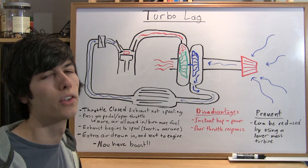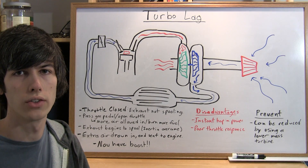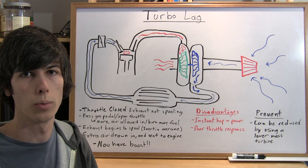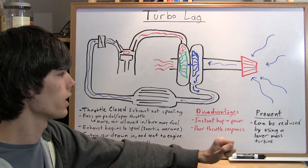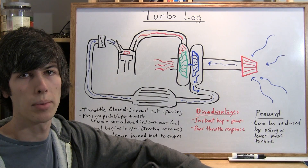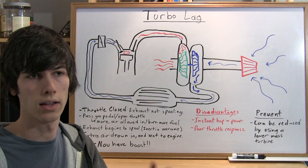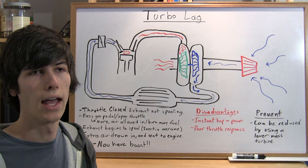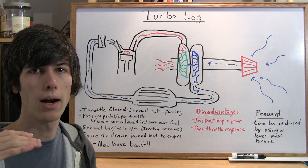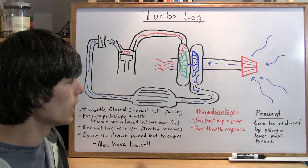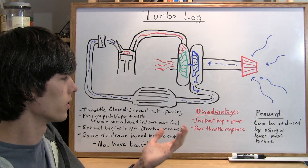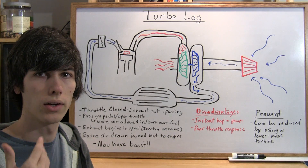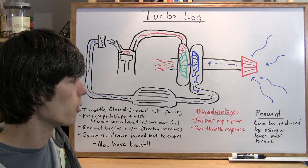The disadvantages of turbo lag — it's something that all turbocharged engines will have, but you can minimize it and some engines respond much better than others. One disadvantage is an abrupt jump in power: you floor it, think your tires have grip, and then all of a sudden the turbo kicks in and you have a great leap in power, so your tires might spin out from under you. The other big disadvantage is poor throttle response — you press on the gas and don't get that great increase in power you were expecting; you have to wait a moment.